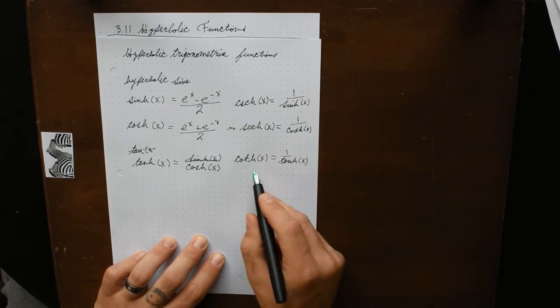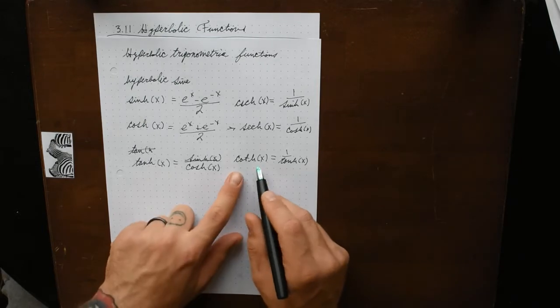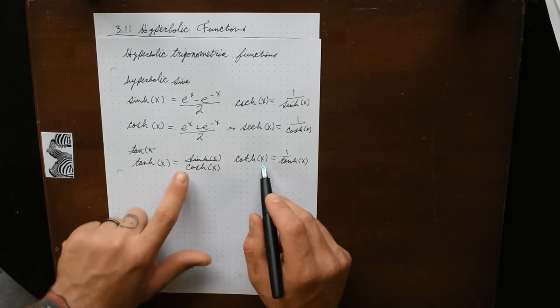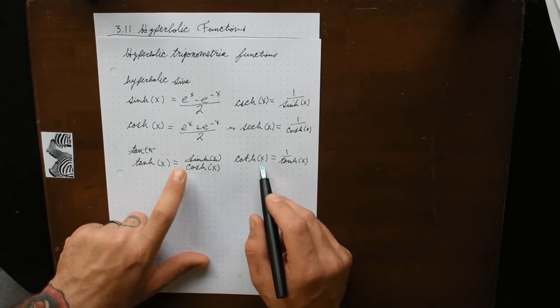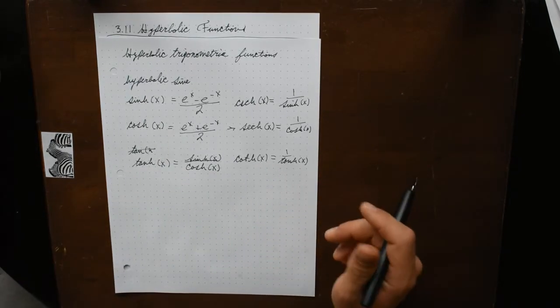The hyperbolic cotangent of x is equal to 1 over tanh(x), or equivalently cosh(x) divided by sinh(x).